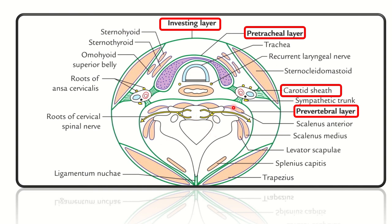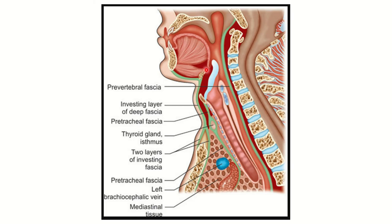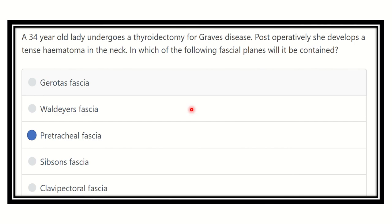The pretracheal fascia lies in front and behind the thyroid gland — we can see it here covering all of the thyroid gland. Our final answer is the pretracheal fascia, because it covers the whole thyroid gland, and following surgery to the thyroid gland, blood may be deposited within the pretracheal fascia, causing the tense hematoma.